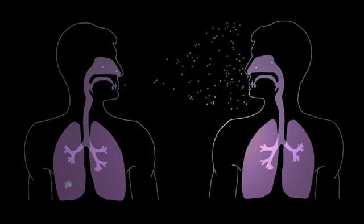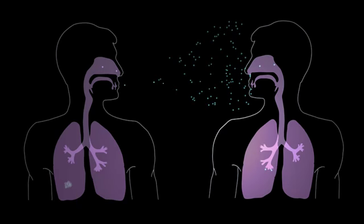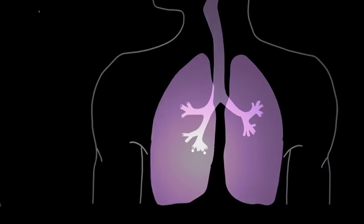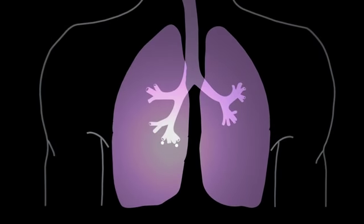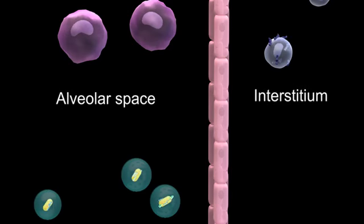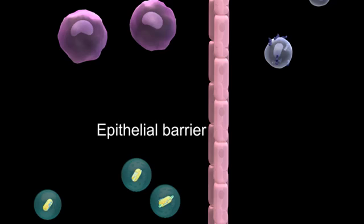These droplets are inhaled by an individual nearby and the smallest ones make their way to the terminal branches of the lung called alveolar spaces or sacs. TB is a deep-seated infection and the bacteria have to establish themselves in the deeper area of the lung, the interstitium. For this, they have to make their way across from the alveolar space through a tight epithelial barrier.